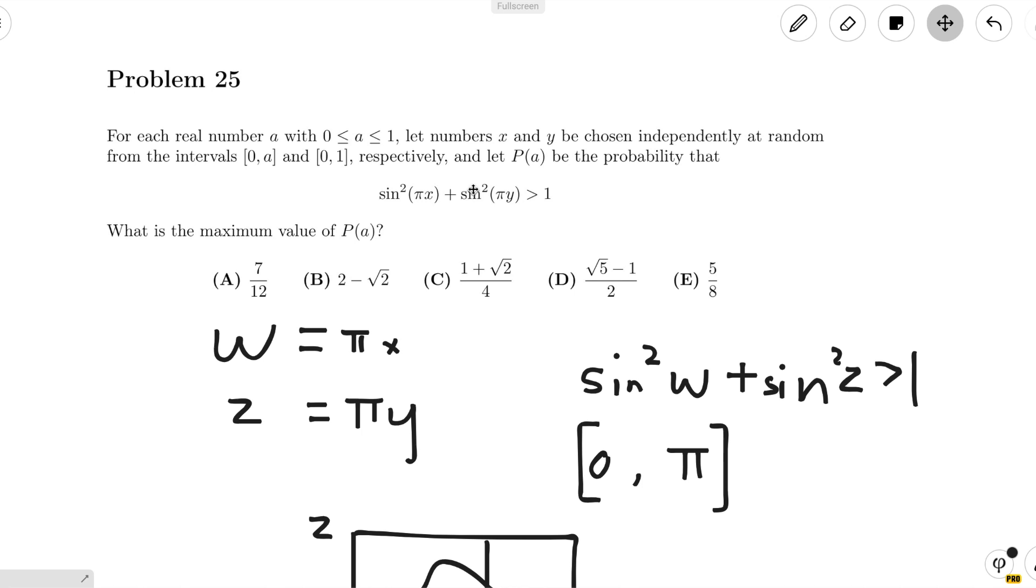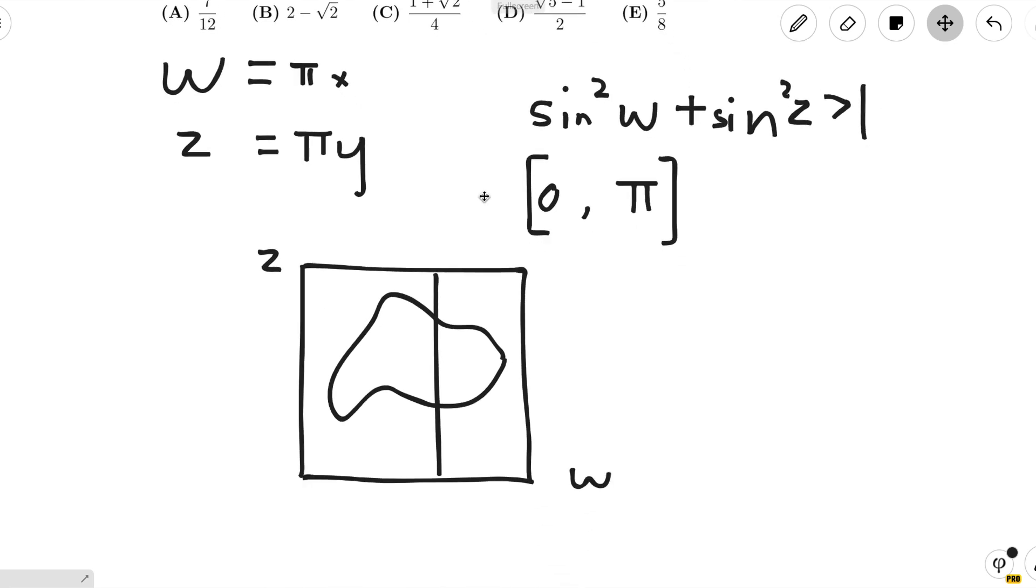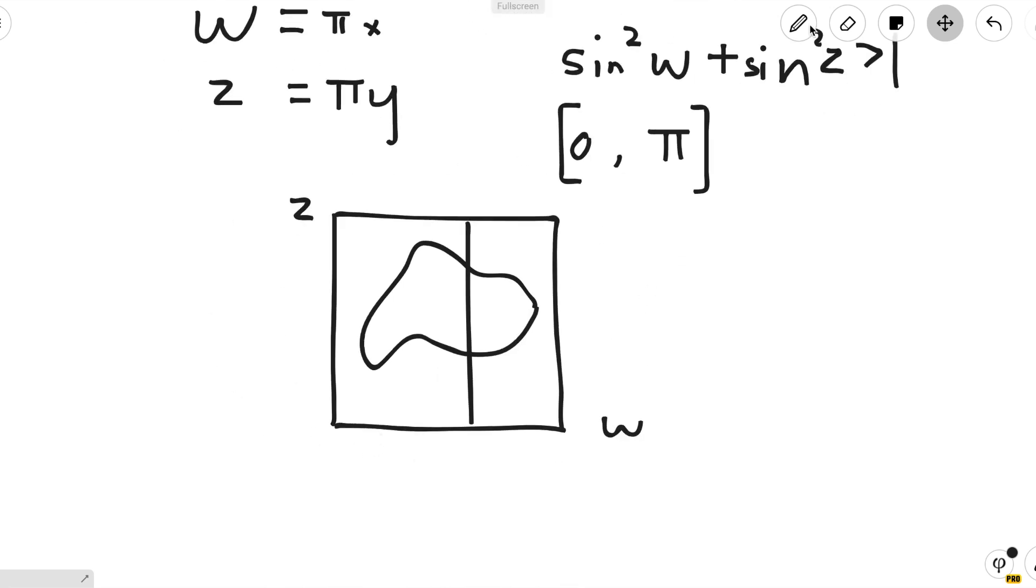Now since we've shifted to w and z, which is from 0 to π, we want to make a from 0 to π. And that works with our square because the values on the w-axis and on the z-axis go from 0 to π. So now let's try to find the region that works.